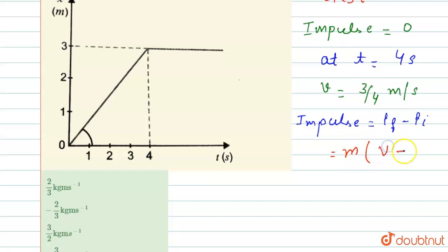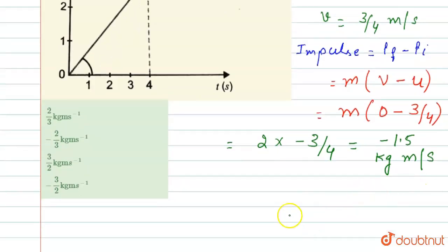m into final velocity is 0 minus 3 by 4. And we have the value of m, m is 2 kg, 2 into minus 3 by 4, which is equals to minus 1.5 kg meter per second, which is further equals to minus 3 by 2 kg meter per second.